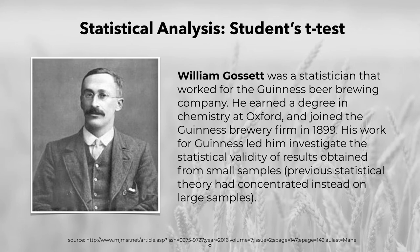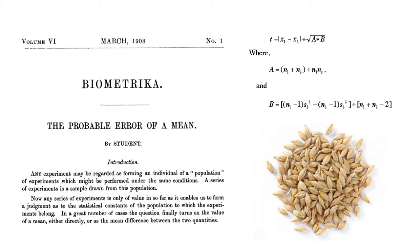William Gossett was a statistician who worked for the Guinness Beer Brewing Company. He earned a degree in chemistry at Oxford and joined the brewing firm in 1899. His work for Guinness led him to investigate the validity of results obtained from small samples. Previous theory had concentrated instead on large samples. Gossett's most important result was known as the student's t-test of distribution, published in 1908.